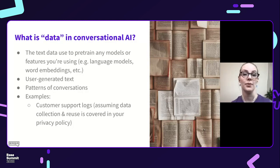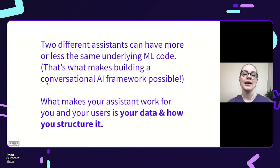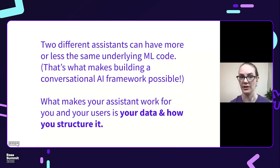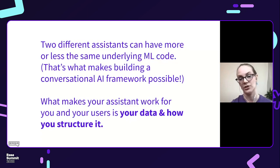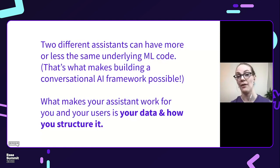A really good example is customer support logs — maybe somebody's chatting with a customer support agent, and if your privacy policy allows for it, you could use that as training data for your assistant. And I'm not going to talk a lot about code here. The fact is that you don't actually need to change a lot of machine learning code to write a really good assistant. Most assistants will have more or less the same underlying machine learning code — that's why a conversational AI framework like Rasa is possible, and why you don't have to be a machine learning expert to build an assistant. What you really do have to be an expert in is your data, what your users need to do, and how they communicate what they need to do.